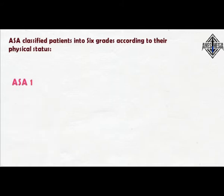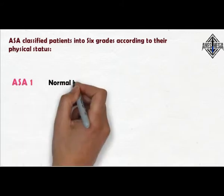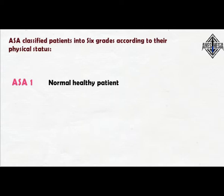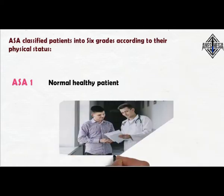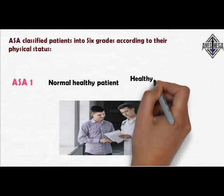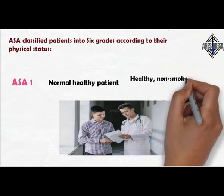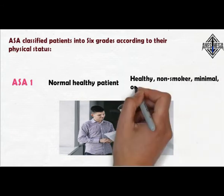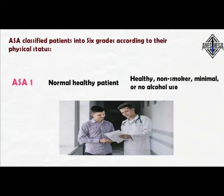ASA 1 — Normal healthy patient. This means the patient remains healthy, is a non-smoker, and has minimal or no alcohol use.